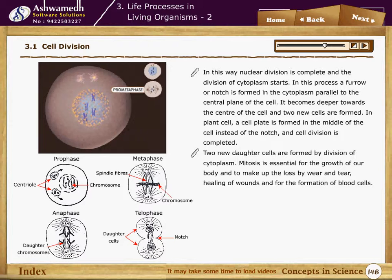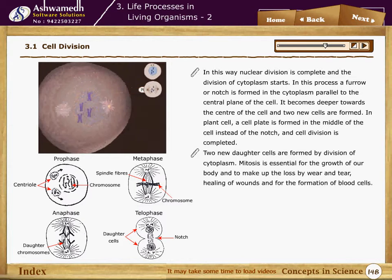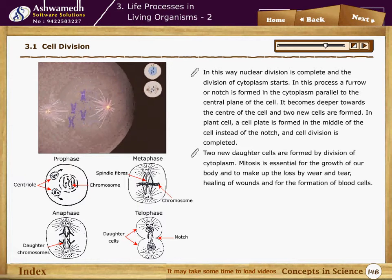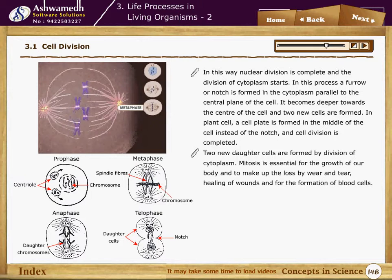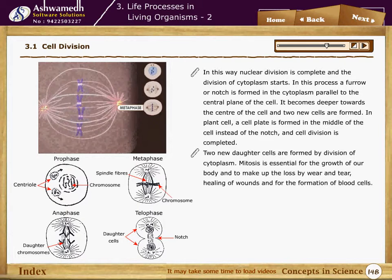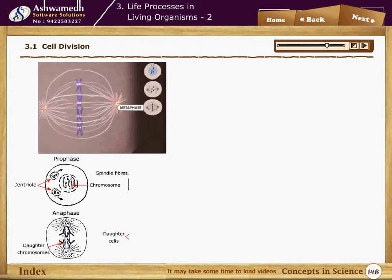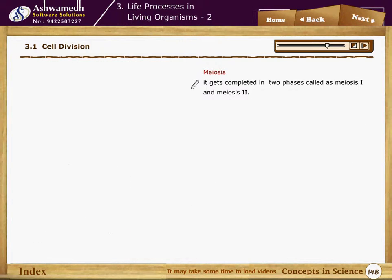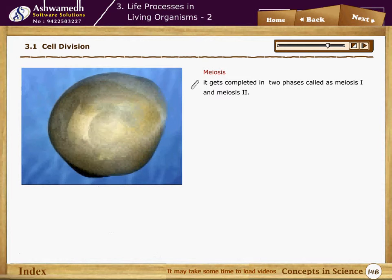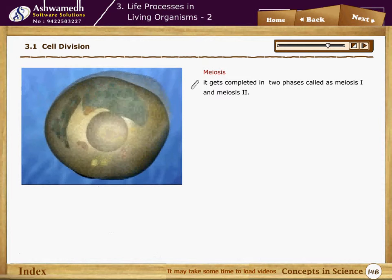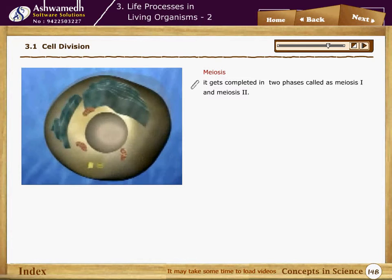Mitosis is essential for the growth of our body, to make up the loss caused by wear and tear, for the healing of wounds, and for the formation of blood cells.